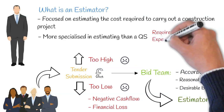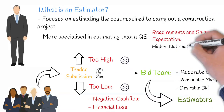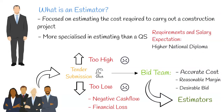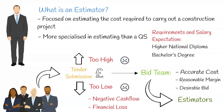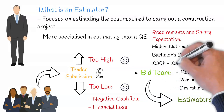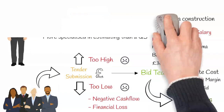To become an estimator you'll be required to obtain at least a HND (Higher National Diploma) or a bachelor's degree using the part-time or full-time path. Once fully qualified, experienced estimators can expect to earn between £30,000 to £50,000 a year, depending on location and sector.